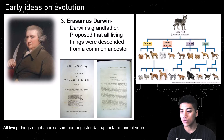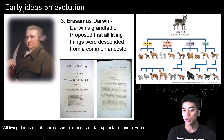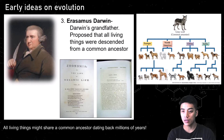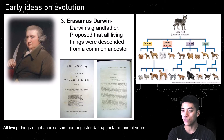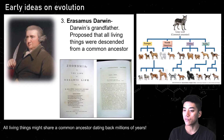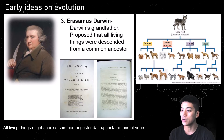Erasmus Darwin, who was Charles Darwin's grandfather, piggybacked on this idea that Buffon had and proposed that all living things were descended from a common ancestor. Just like the gray wolf is the common ancestor for all the different dog species you have in Europe, North America, China, and India — with different subspecies as well.